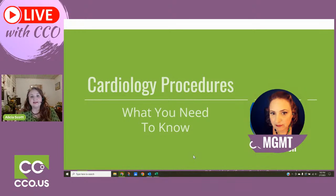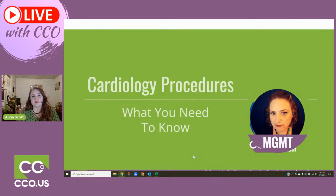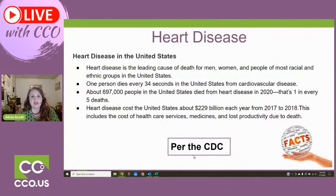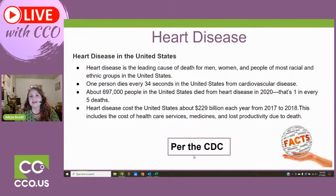We're actually not going to look at any codes tonight. We're going to talk about the information and the knowledge you need to be able to code and abstract at the highest specificity. We're going to talk a little bit about the disease process, because procedures done in cardiology are based on anatomy and the disease process. And we need to know the information at the highest specificity. I'm also going to give you some highlights about the procedures and things you need to know within each procedure.